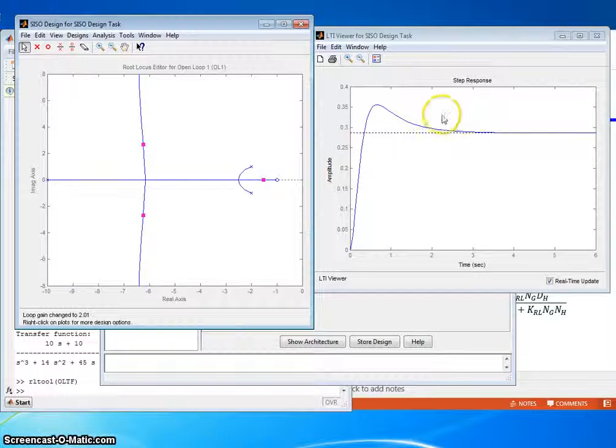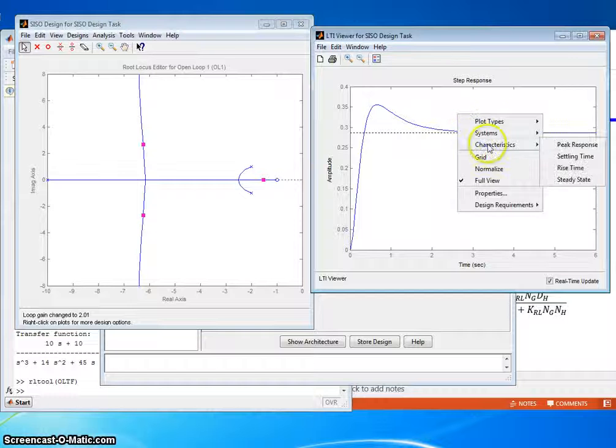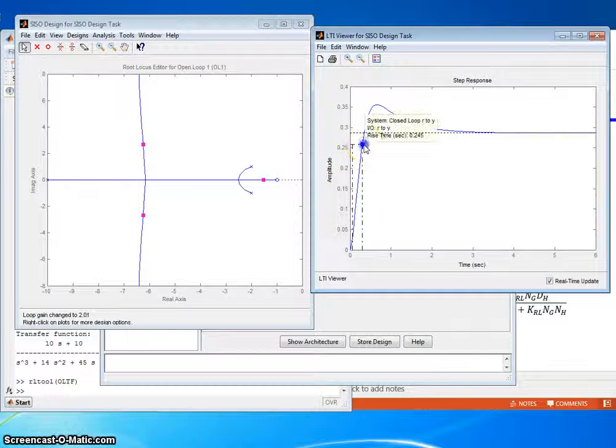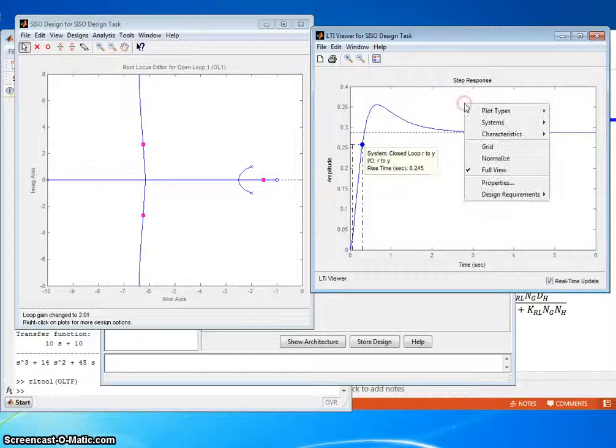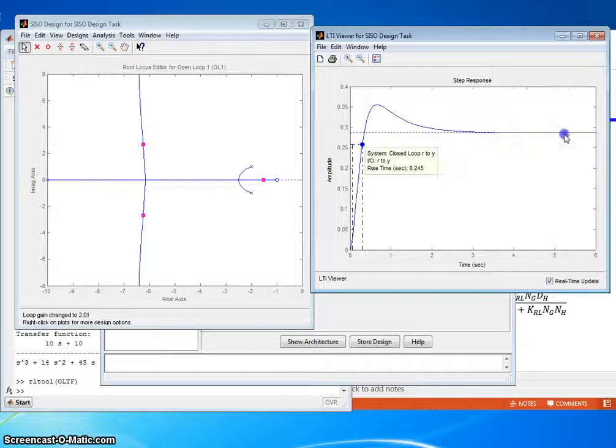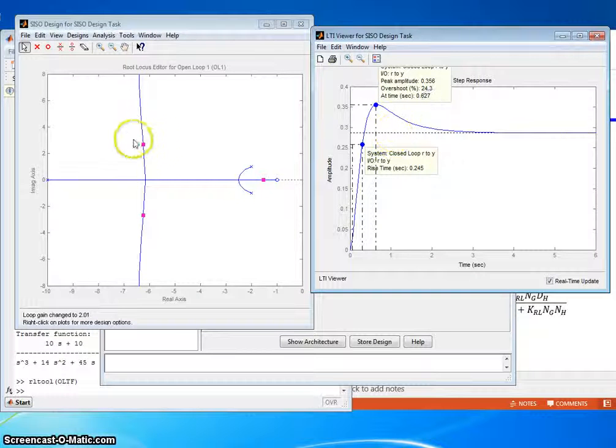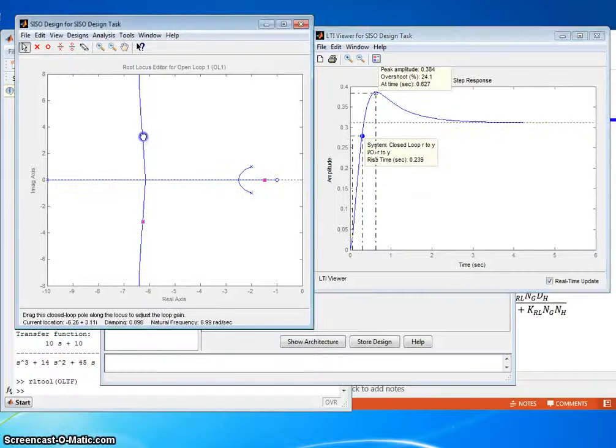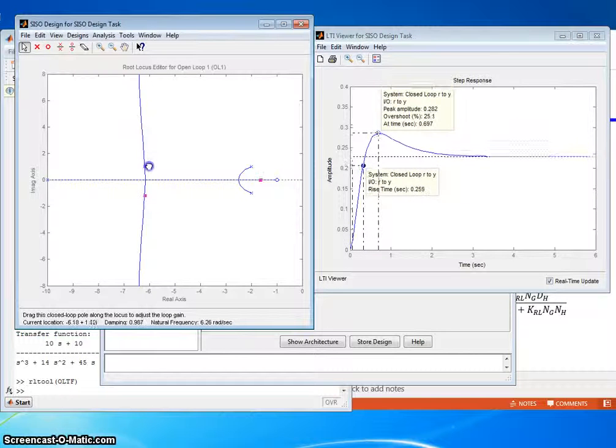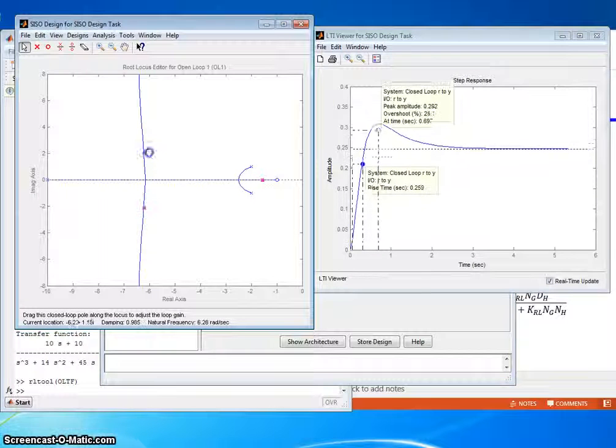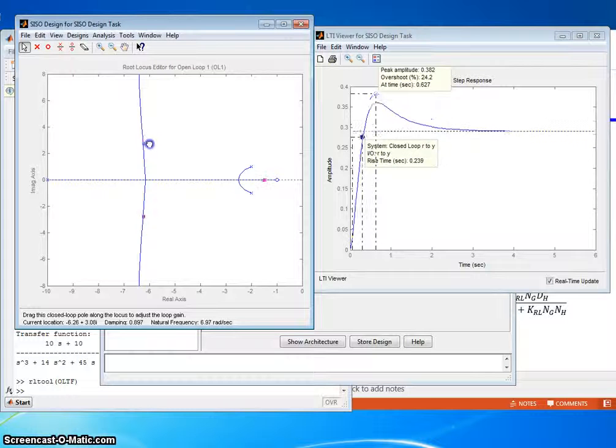All right, we can also, just like we did before, put on some of the characteristics. Rise time, go ahead and put the value there. Let's put the peak response and put the value there. Same thing, I can come back here now and move, and it's going to auto-calculate the rise time and the peak response as I change the location of the closed loop pole.